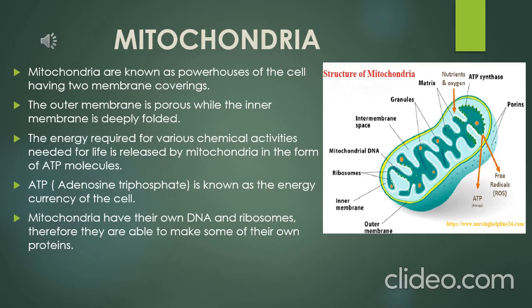Mitochondria have their own DNA and ribosomes. It is the first cell organelle having its own DNA and ribosomes, and therefore they are able to make some of their own proteins. Other cell organelles do not have their own DNA and ribosomes.